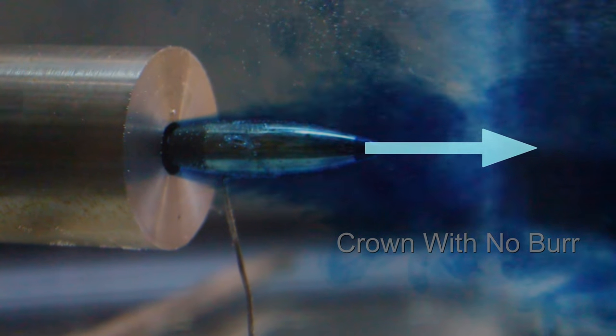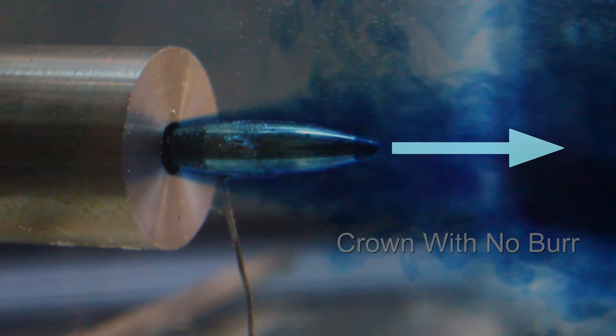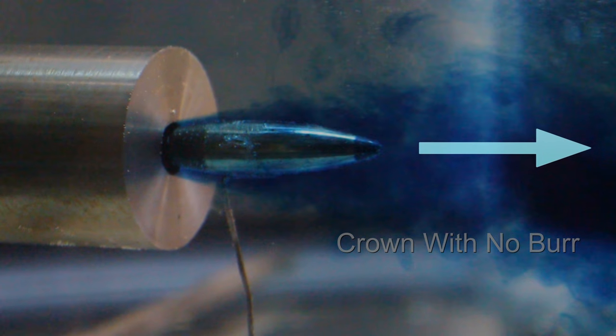Expanding gases propelling a bullet through the bore are naturally moving faster than the bullet. And once the bullet clears the bore, those expanding gases start to envelop the bullet, but rapidly slow down because of drag.